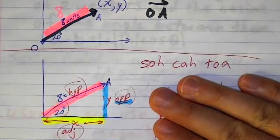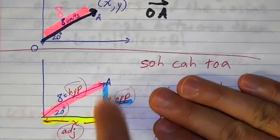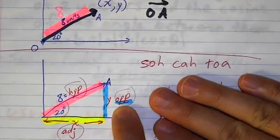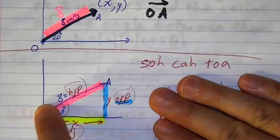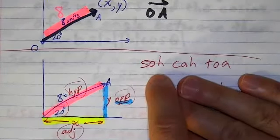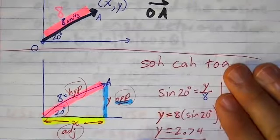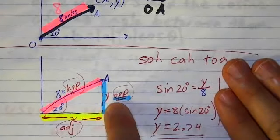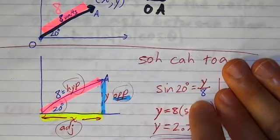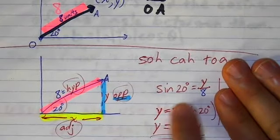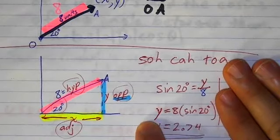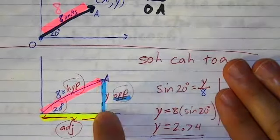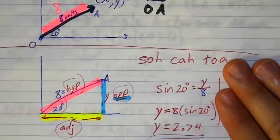So in order to find the y value, I'm going to be using opposite and the hypotenuse. So if I'm using opposite and the hypotenuse, I'm going to use sine. So I can say, okay, so sine of 20 degrees equals opposite over hypotenuse, y over eight. And then if I multiply both sides by eight, I get this and ends up with the y component is 2.74.